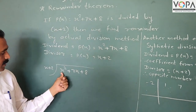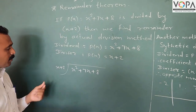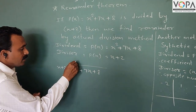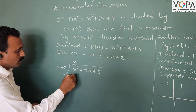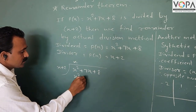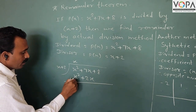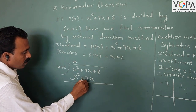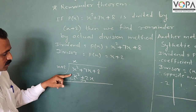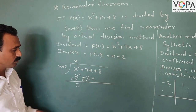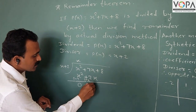Now, the first term of the dividend is x² and the divisor is x. Then x² divided by x is x. Then multiply x by (x + 2), giving x² + 2x. Then the sign opposite: minus x² minus 2x. Then x² minus x² is 0, and 7x minus 2x gives 5x.